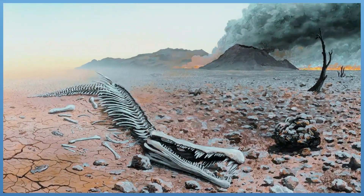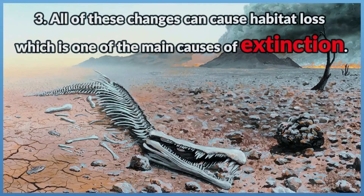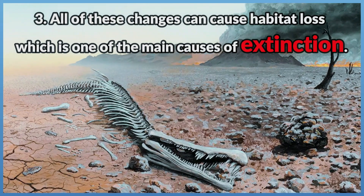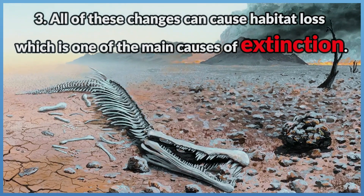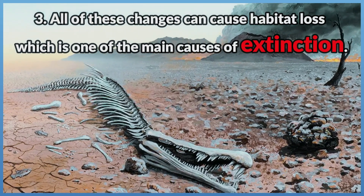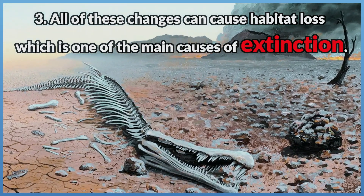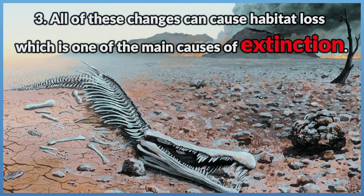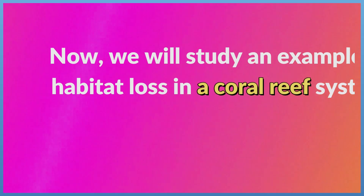All of these changes can cause habitat loss, which is one of the main causes of extinction. Now, we will study an example of habitat loss in a coral reef system.